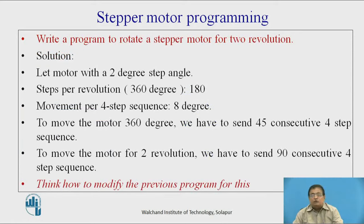Now write a program to rotate the stepper motor for 2 revolutions, with a 2-degree step angle. After sending one sequence, the motor moves 2 degrees, so the steps per revolution will be 180 (360 divided by 2). Movement per 4-step sequence is 8 degrees (2 × 4). To move the rotor 360 degrees, we must send the sequence 45 consecutive times. So to move the motor for 2 revolutions, we must send 90 consecutive four-step sequences.